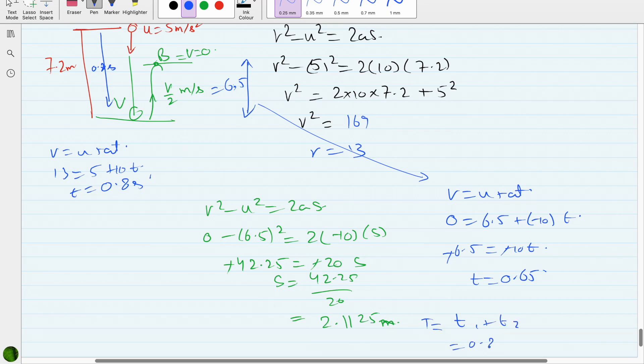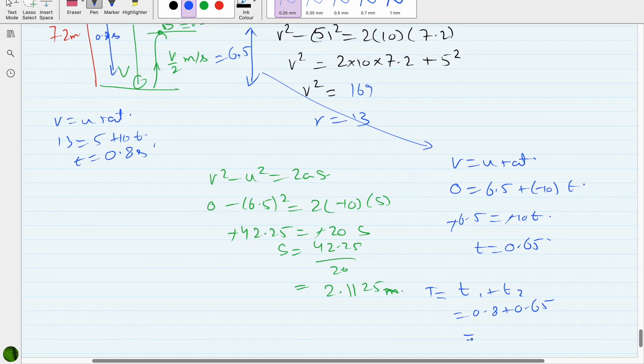Firstly, time to come down was 0.8, so t₁ + t₂ total time would be 0.8 + 0.65. 0.8 + 0.65 gives me 1.45 seconds. This was not required, this was extra. So 1.45 seconds.